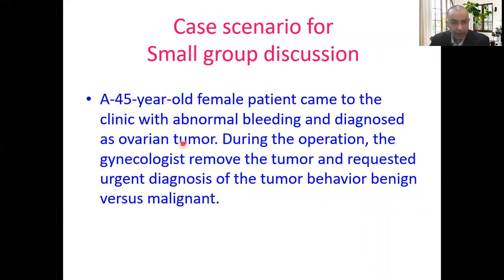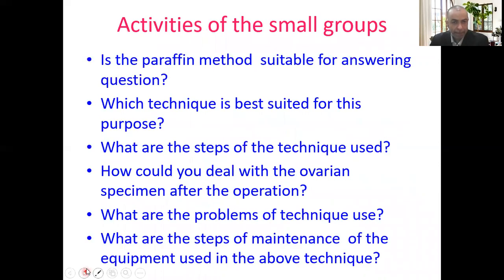A 45-year-old female patient came to the clinic with abnormal bleeding and was diagnosed with an ovarian tumor. During the operation, the gynecologist removed the tumor and requested an urgent diagnosis of the tumor behavior — meaning benign versus malignant. Today we will answer: Is the paraffin method suitable? Which technique is best suited? What are the steps of the technique? How do you deal with the ovarian specimen after operation? And what are the problems of the technique used?